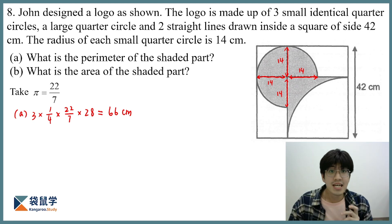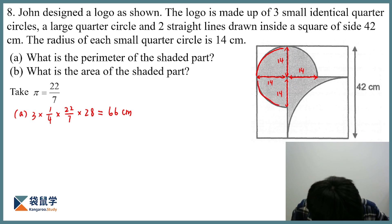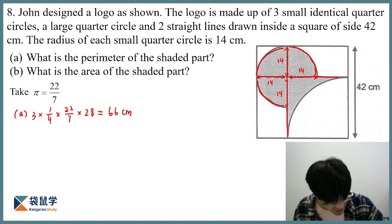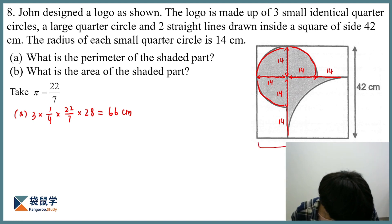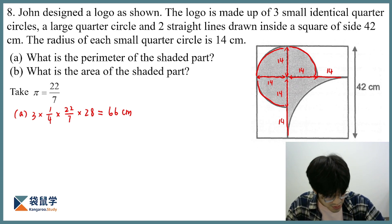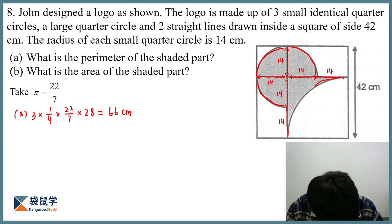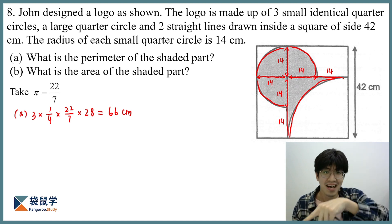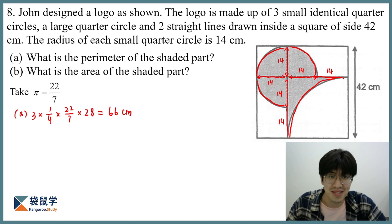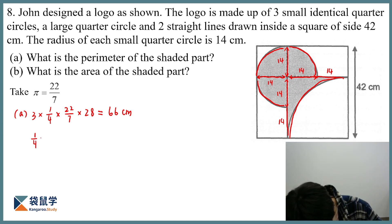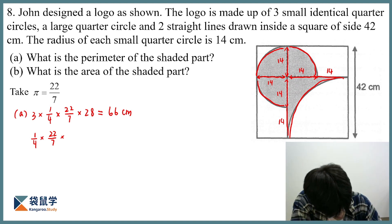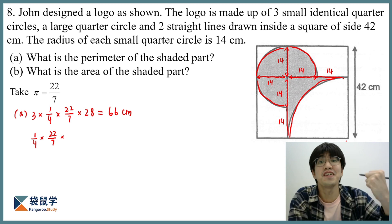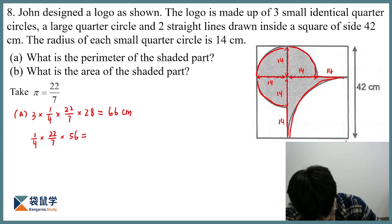So this accounts for the three sectors — this one, this one, and this one. We also have these straight lines, which is 14 and 14, because they should add up to the side of this square, which is 42. Now what about this big curved area? That's simply a big sector, a big quarter circle. We can simply take a quarter times pi times the diameter. What is the diameter of this large circle? The radius of this quarter is 28, so the diameter is 56. And if you do this calculation, you will get 44.